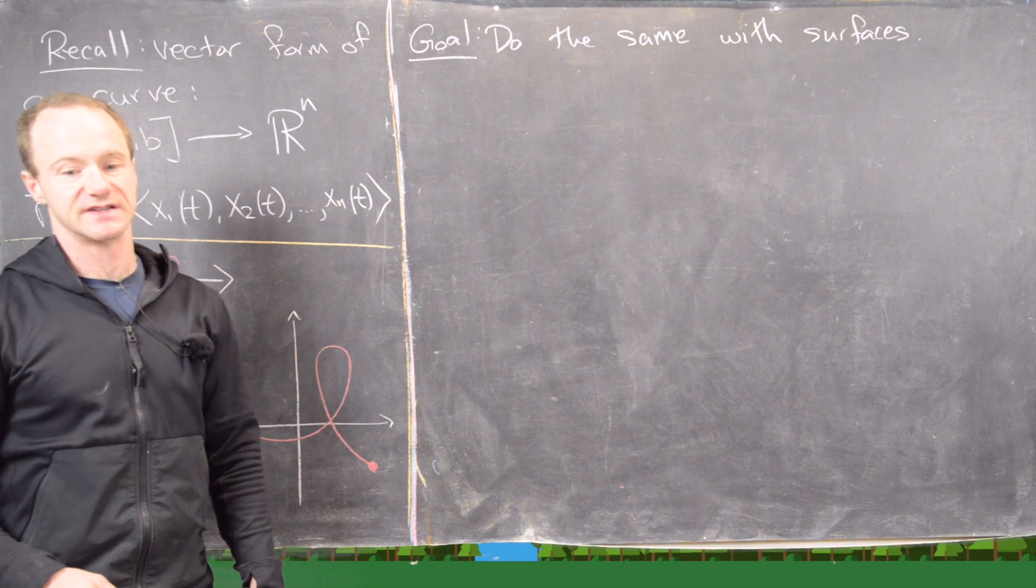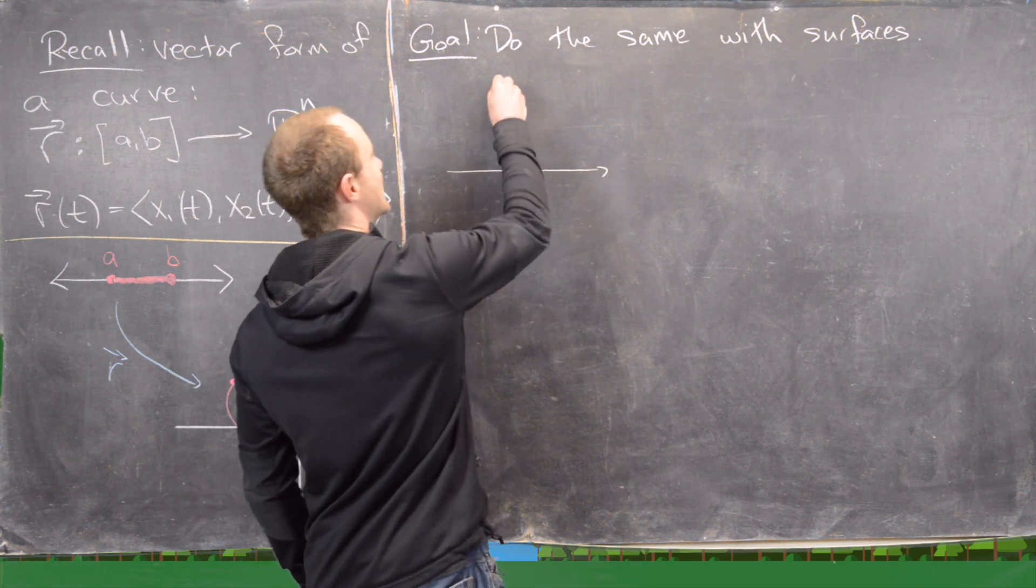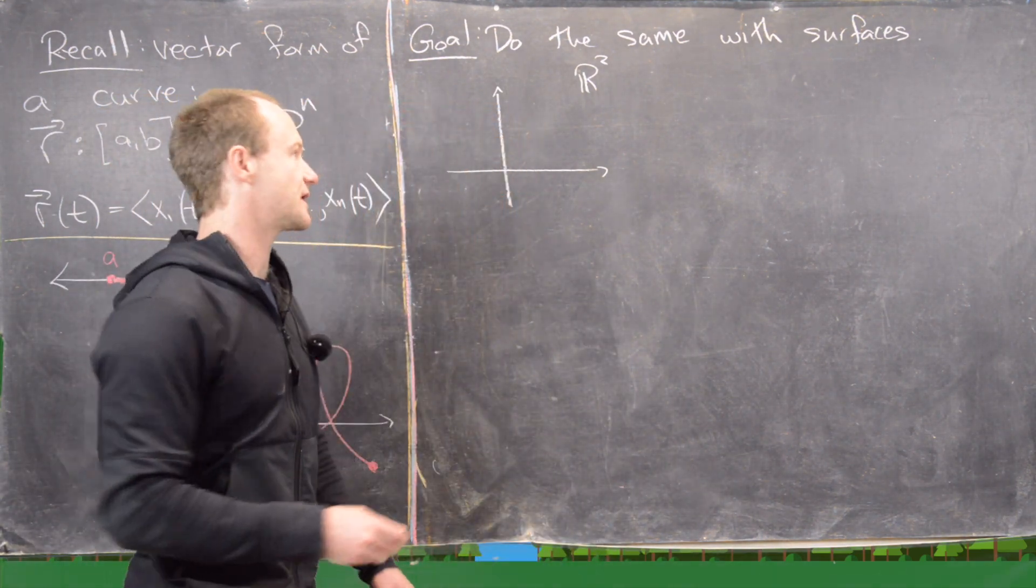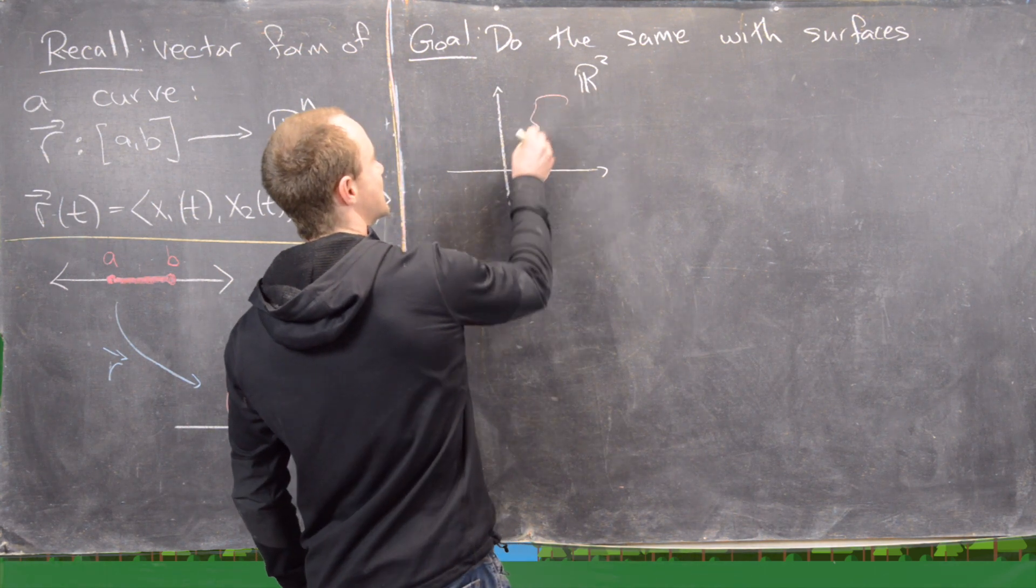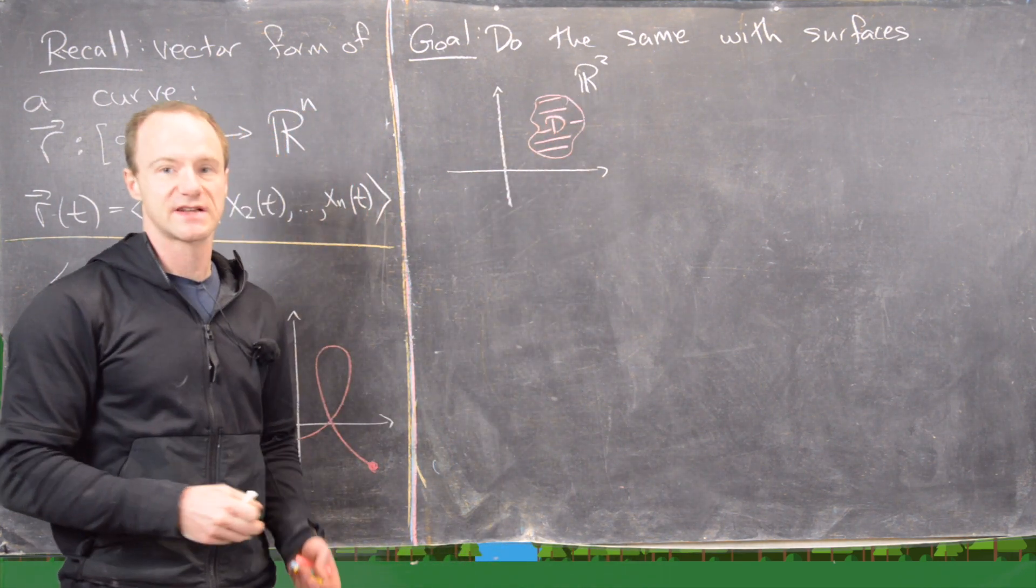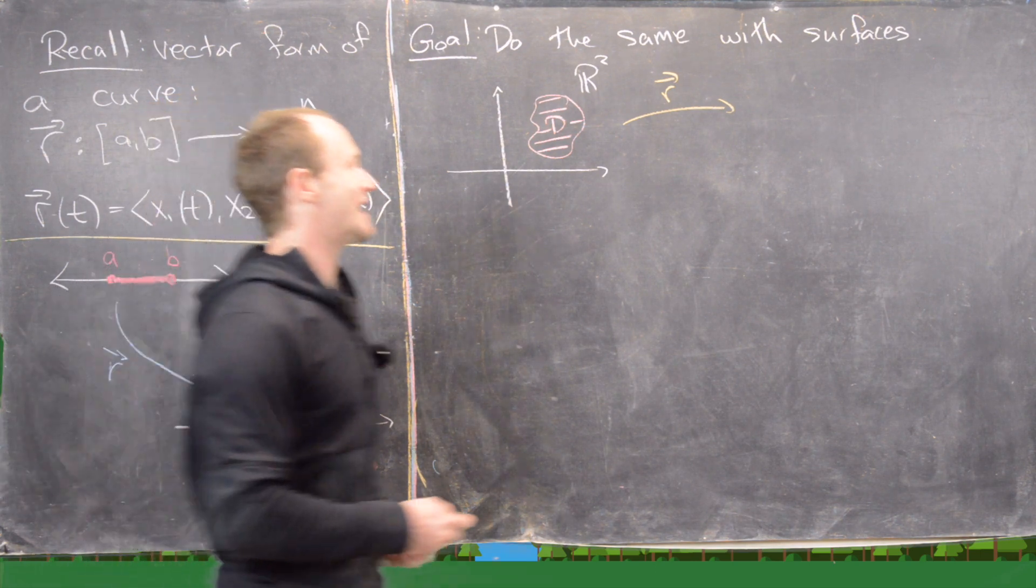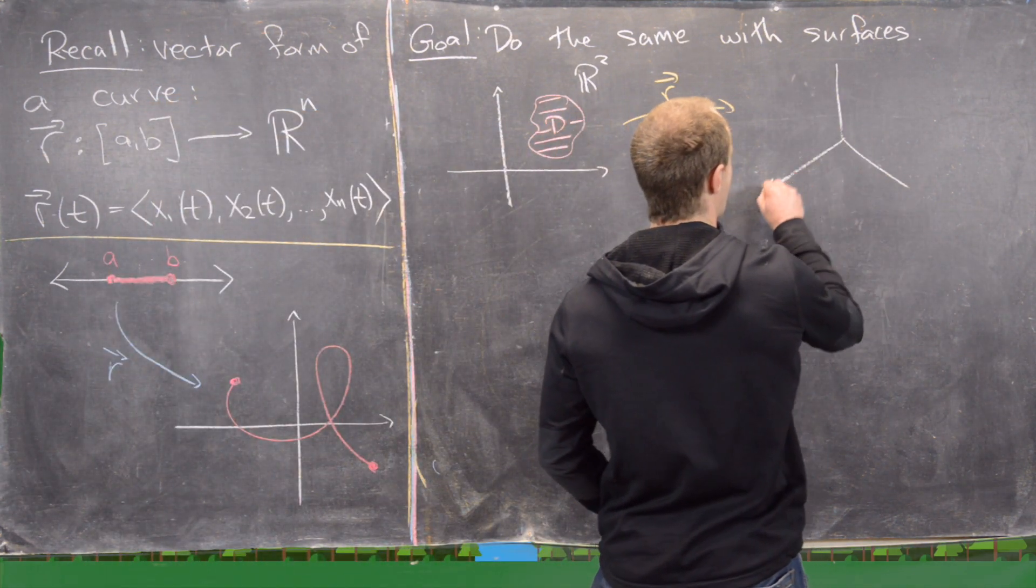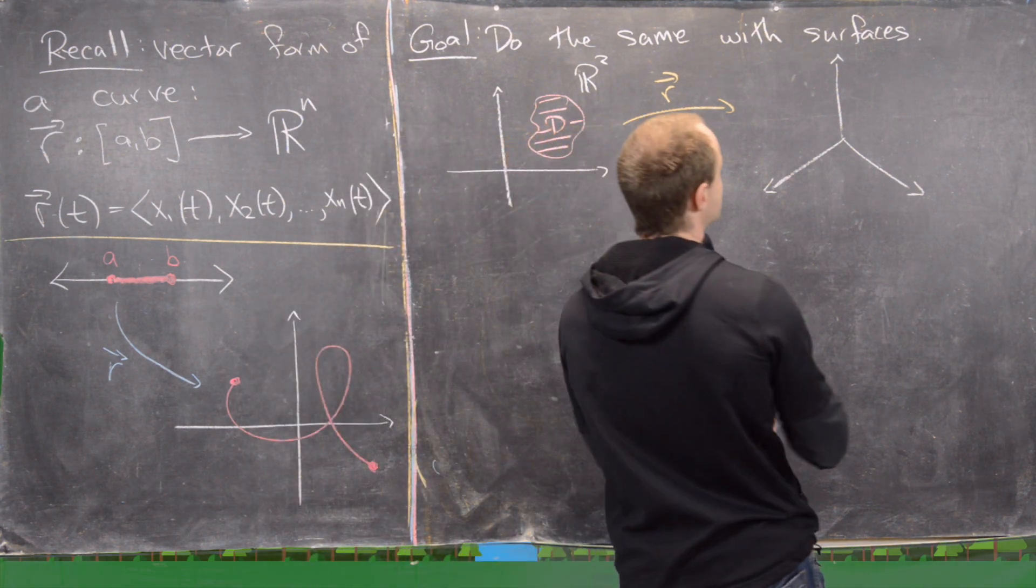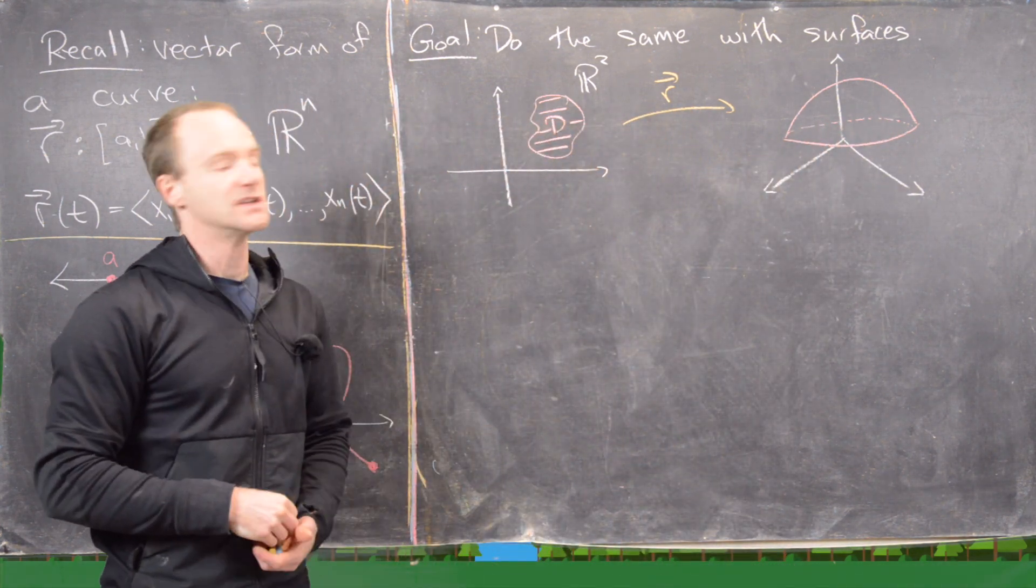And so we want to slightly generalize that to do the same thing with surfaces. In other words, we want to start out with some sort of set in R^2, but instead of having an interval, because there's no real notion of an interval here, we want just some random shaped set in R^2, so I'll call it D, and it'll have that shape. And we want some kind of function, I'll call it r again, that takes this patch in R^2 to a surface in R^3. Or really, we could have it in any higher dimensional space as well, but we'll just stick with R^3. And so let's say maybe the surface looks like this, so it's maybe this little cap.